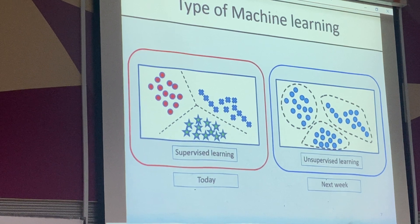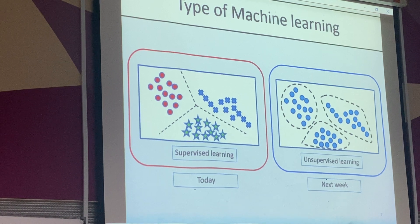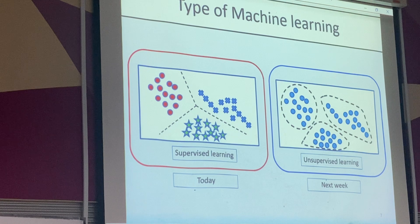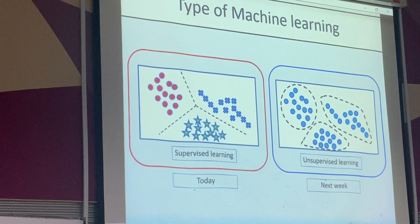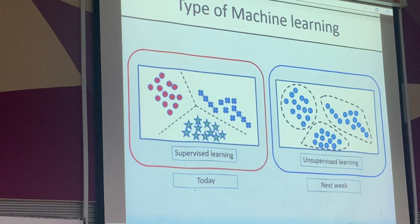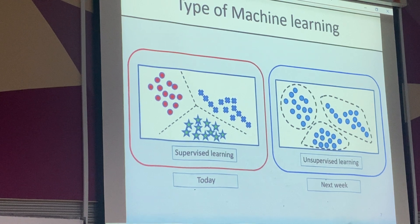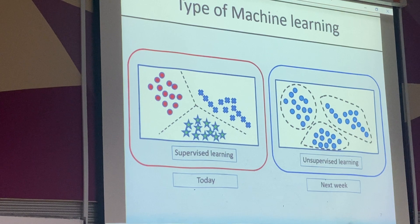I won't cover all the algorithms, but I'll choose four commonly used ones in academics and industry — for example, decision tree is very popular in companies. I'll explain them in detail today, and next week we'll go into unsupervised learning. So what is the difference between supervised and unsupervised?